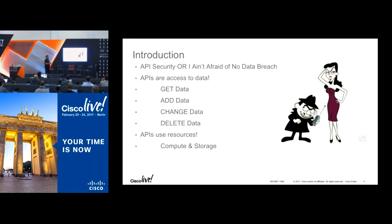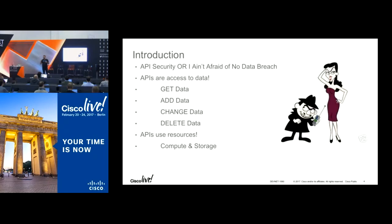APIs also use resources. I'm sure you've heard of DDoS attacks. Whenever an API call is made, it's hitting the server and taking up bandwidth. If someone is consistently using an API and not getting shut out, that could cause that service to go down if the load's too high. So we want to make sure we're controlling that environment. That's why these particular security methods are in place.